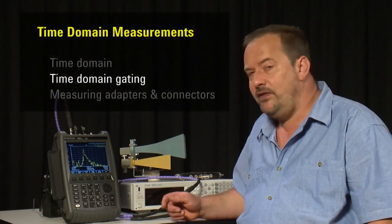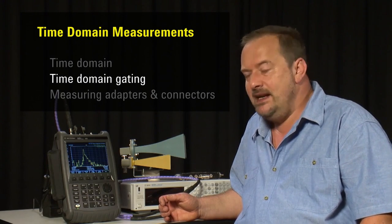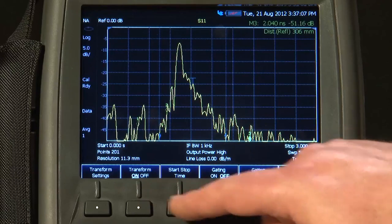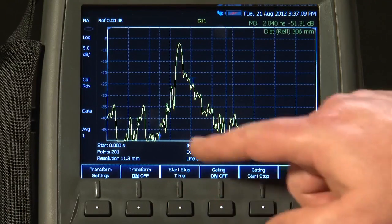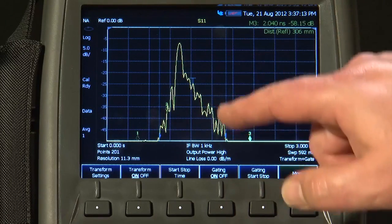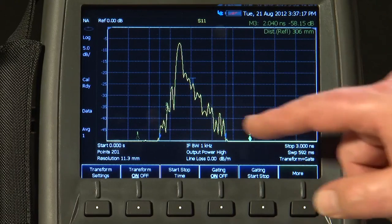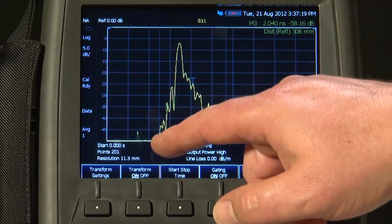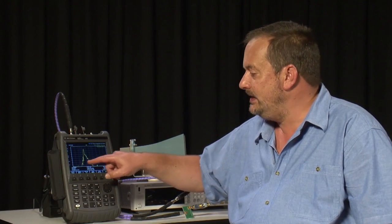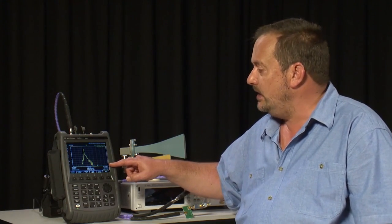But the FieldFox has an especially useful function called time domain gating. What time domain gating does, if I just turn it on, where these blue markers are, it keeps the trace. But to the left and to the right of the markers, it artificially sets the trace data to zero. In other words, it has deleted from the time domain response the non-50 ohm discontinuity effects that we do not want to measure when we are measuring S11.